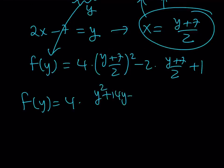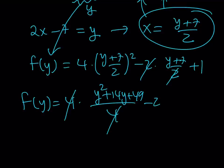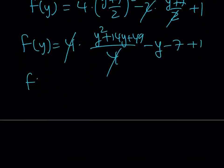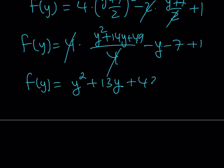The expression inside the parentheses can be written as y squared plus 14y plus 49 divided by 4. The 4 cancels out with the coefficient, leaving minus y minus 7 plus 1. So f of y can be written as y squared plus 14y minus y, which is 13y. And 49 minus 7 is 42, plus 1 is 43. So f of y equals y squared plus 13y plus 43.